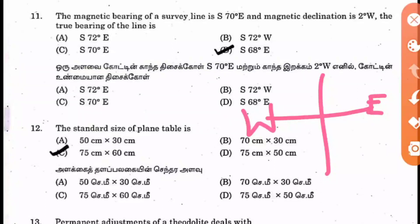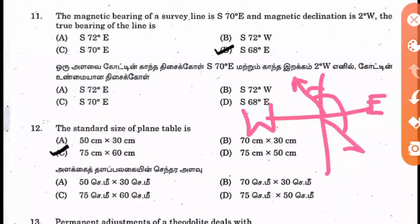The magnetic declination is 2 degrees West. Let us draw the declination first — 2 degrees towards the West. Let us keep this as your magnetic line. The angle given is South 70 degrees East, so from here it is South 70 degrees East — this is your line.